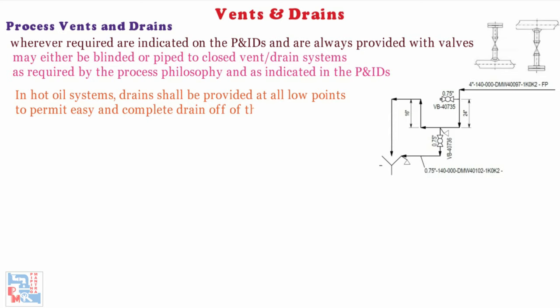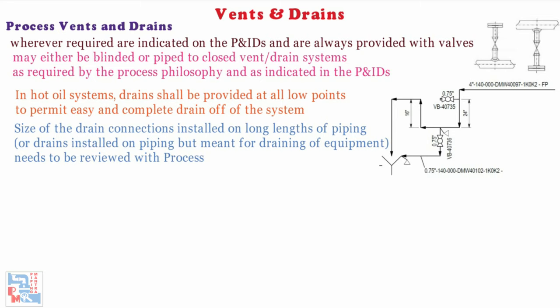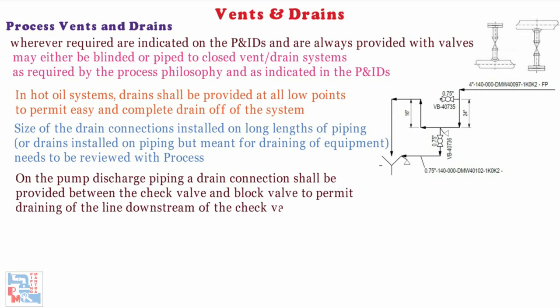The drains should be connected to the hot oil drain system. The size of drain connections installed on long lengths of piping, or drains installed on piping but meant for draining of equipment, needs to be reviewed with the process team for the emptying time. On the pump discharge piping, a drain connection shall be provided between the check valve and block valve to permit draining of the line downstream of the check valve. This drain connection shall be indicated in the P&ID.